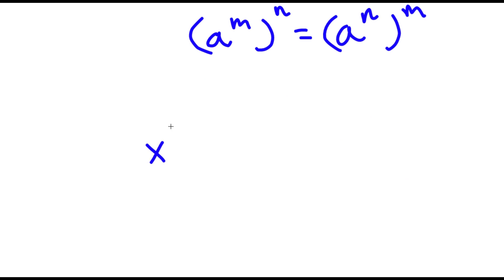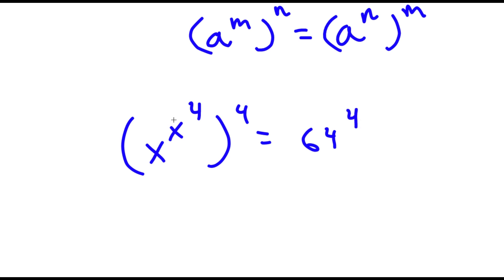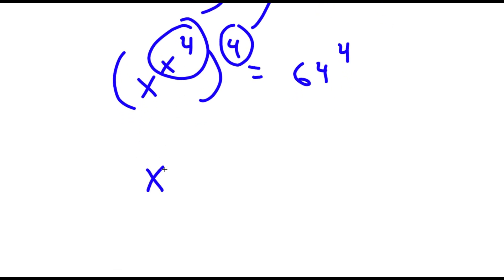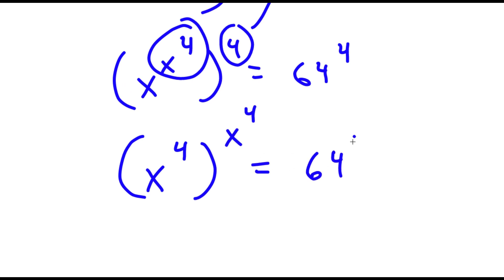So for our equation here, I can think of x to the power of 4 as m and 4 as n. Because I can switch these two places, I'm going to write this as x to the power of 4 to the power of x to the power of 4, which is equal to 64 to the power of 4. All I did was switch the places of x to the power of 4 and 4.